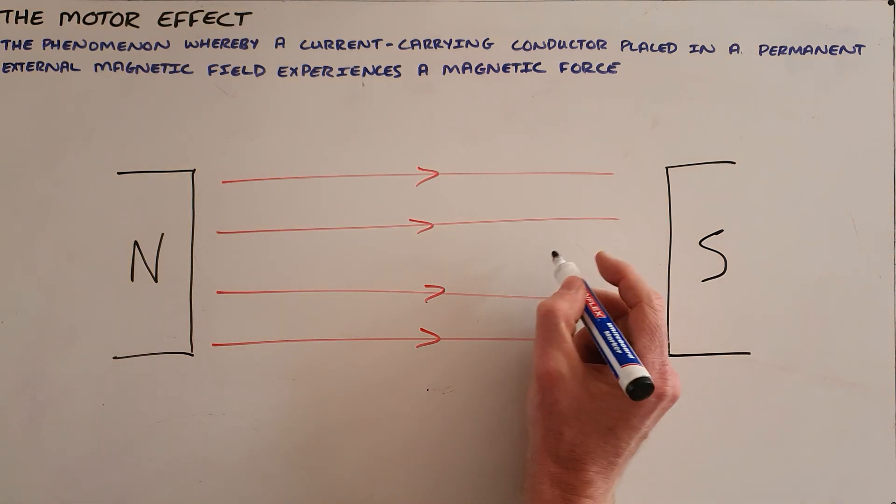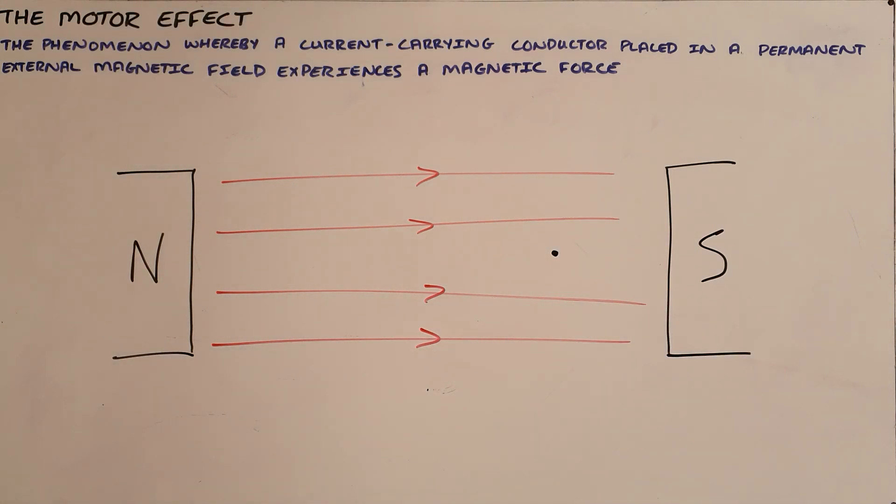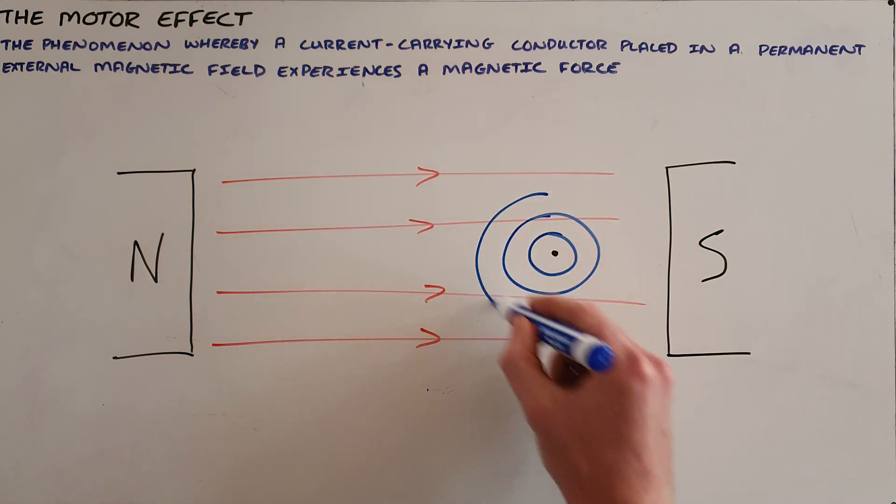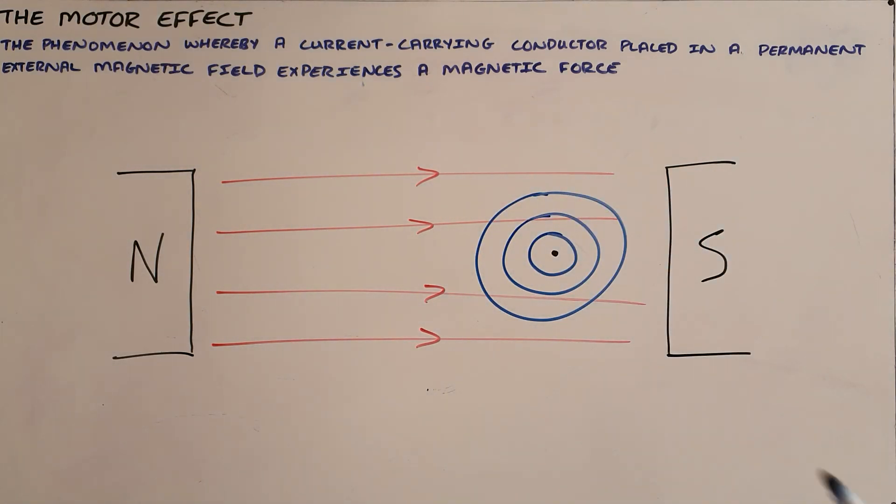We can illustrate the motor effect by showing that a current carrying conductor that is carrying current out of the board, illustrated with a dot representing conventional current moving out of the board, would have a magnetic field surrounding it because of the changing electric field within that conductor. As a result, we have a magnetic field surrounding it and perpendicular to it.